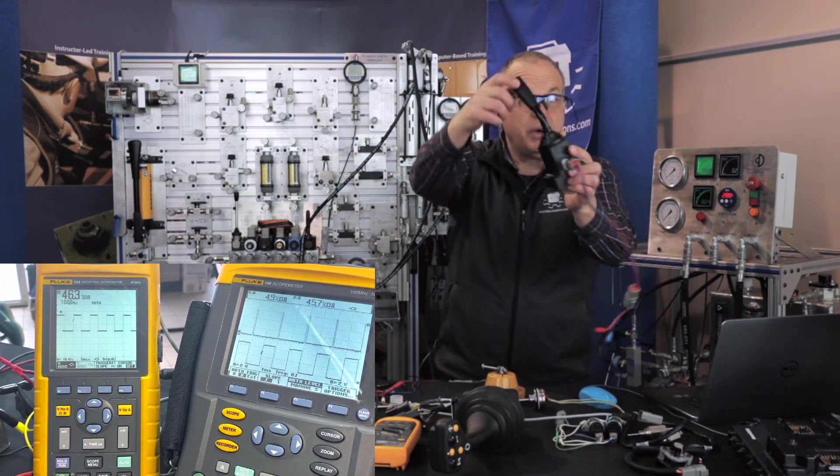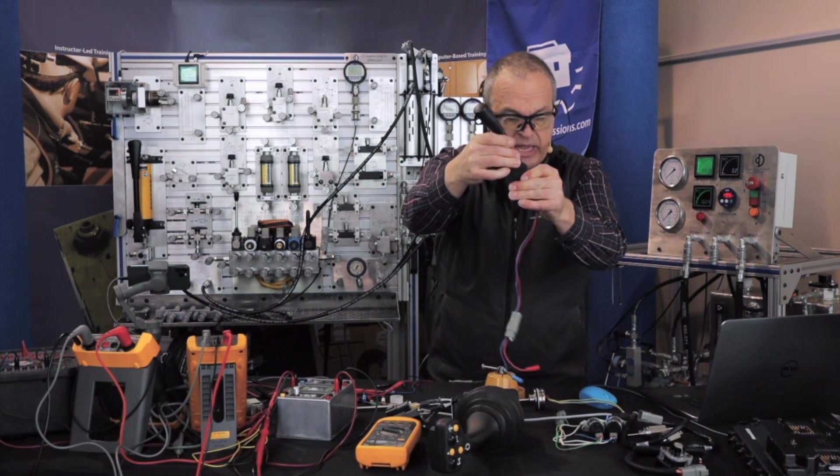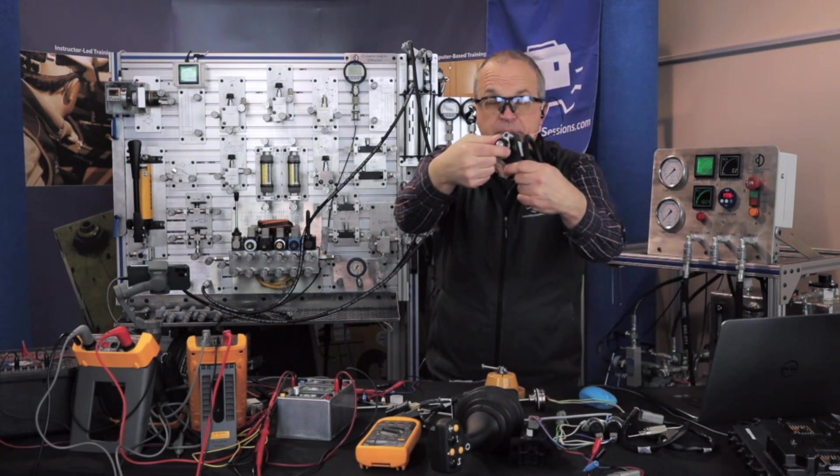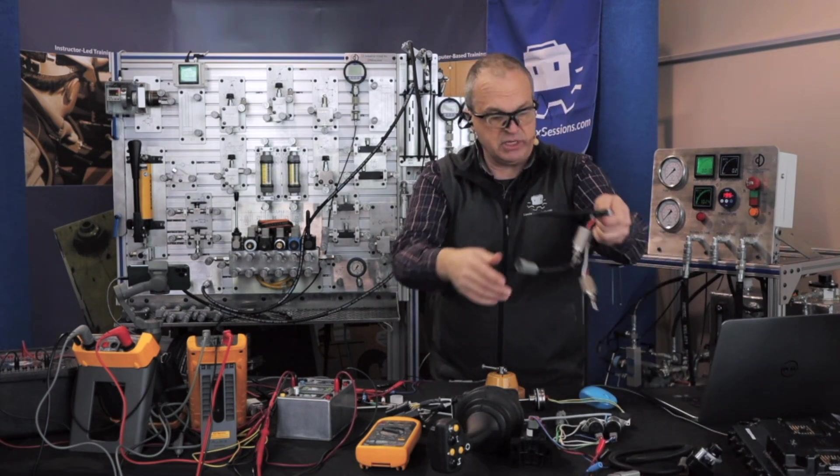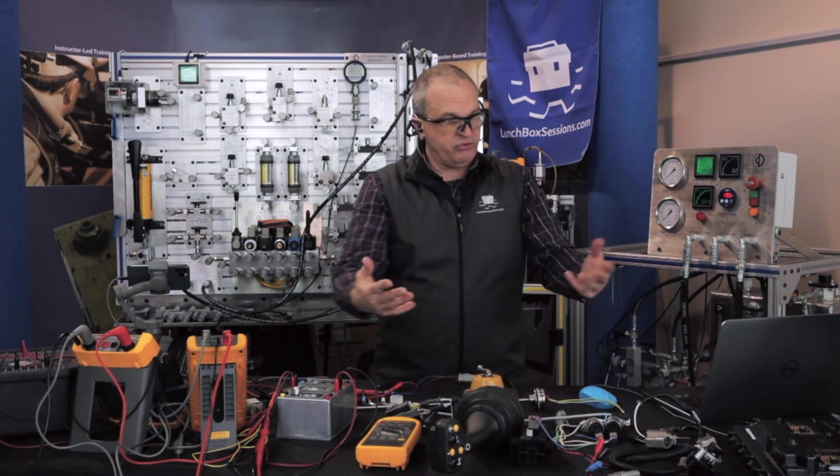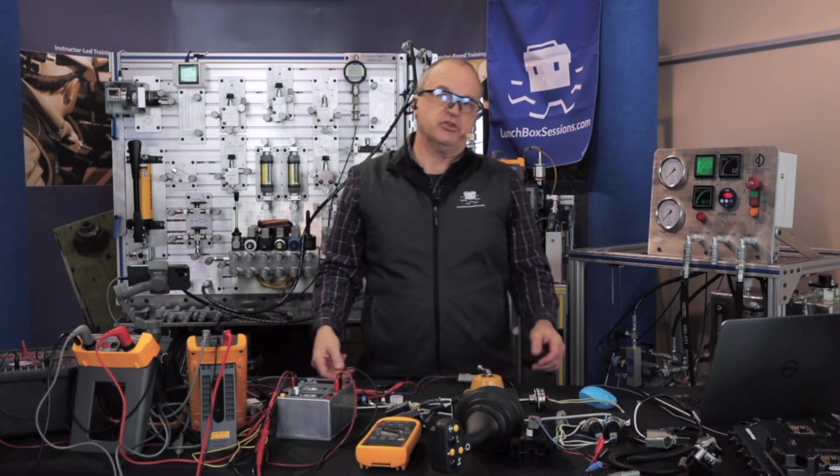Some other pulse width modulation sensors might show up inside the operator's cabin as control levers or as the throttle position sensor under the pedal. Even some heat and temperature sensors are using pulse width modulation. That's a typical set of applications for PWM. What are your thoughts? Do you have some questions?